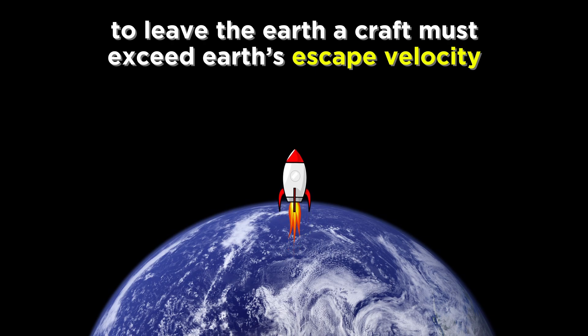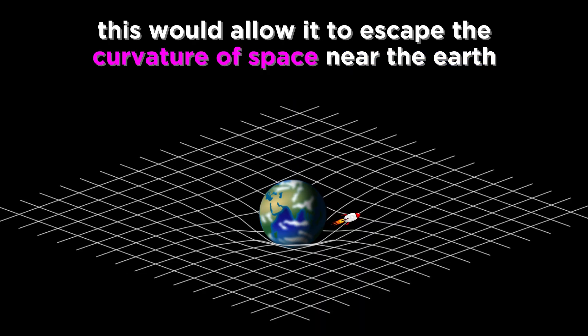But something can escape Earth's gravitational pull if it can travel away from the Earth at a velocity that exceeds the Earth's escape velocity. This means it is traveling so fast that it can climb out of the curvature, kind of like a ball rolling fast enough to get all the way up a hill.